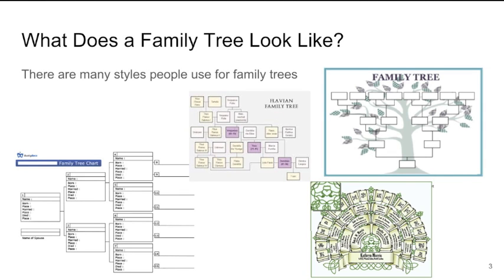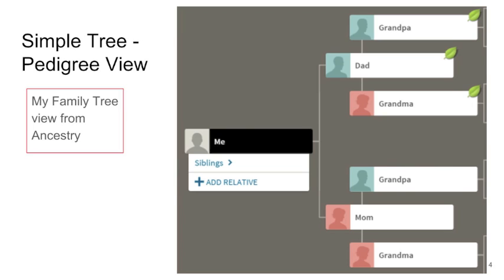Family trees done by hand can take many forms. Even though computer generated trees are pretty standard in format, many tree building products can print the less common forms. Most trees are shown on a computer in one or both of the views: a pedigree view or the family view. The pedigree tree shows only direct ancestors, but in most cases the boxes can be opened to see children, spouses, or siblings. Most find this pedigree view to be simpler.